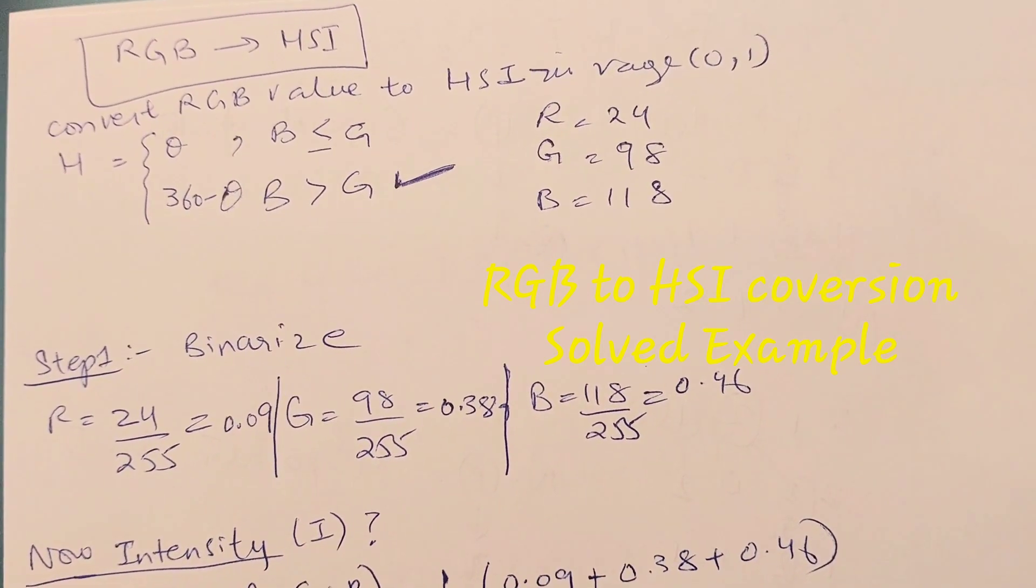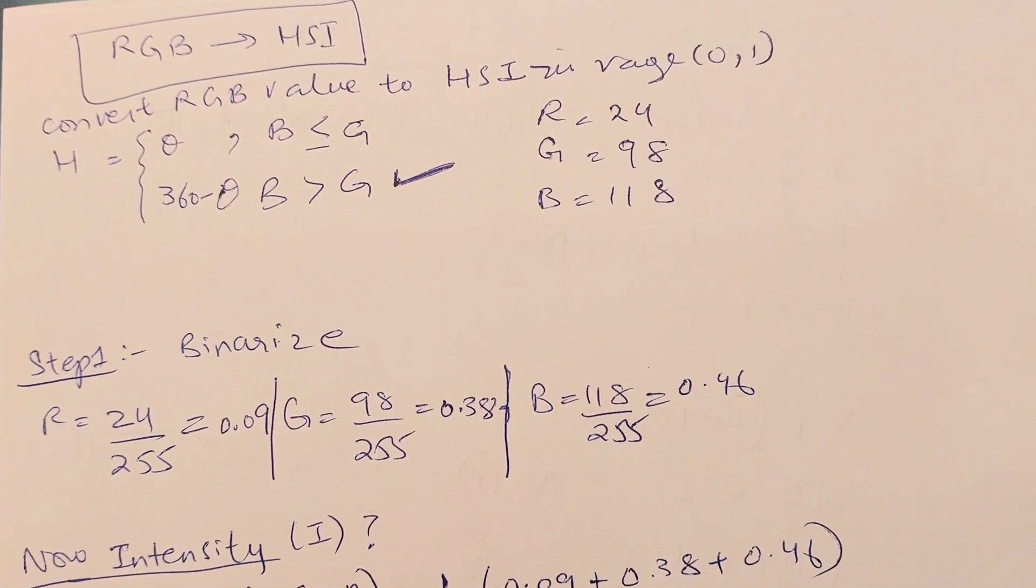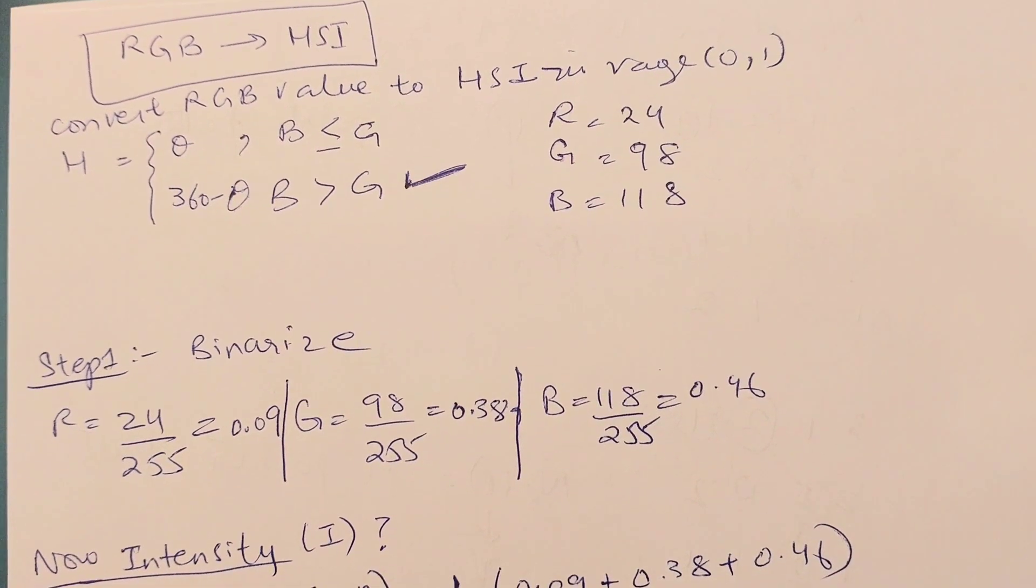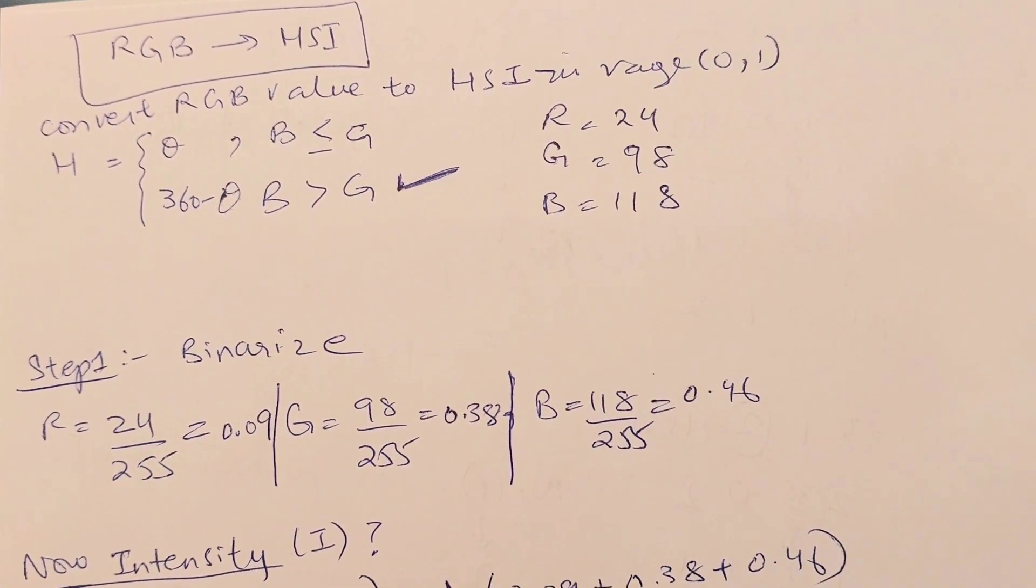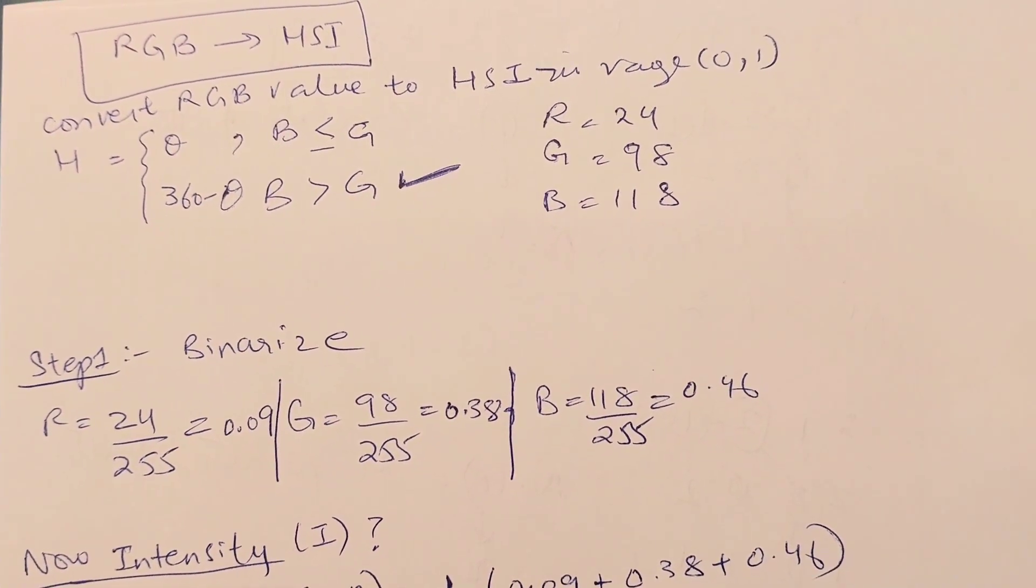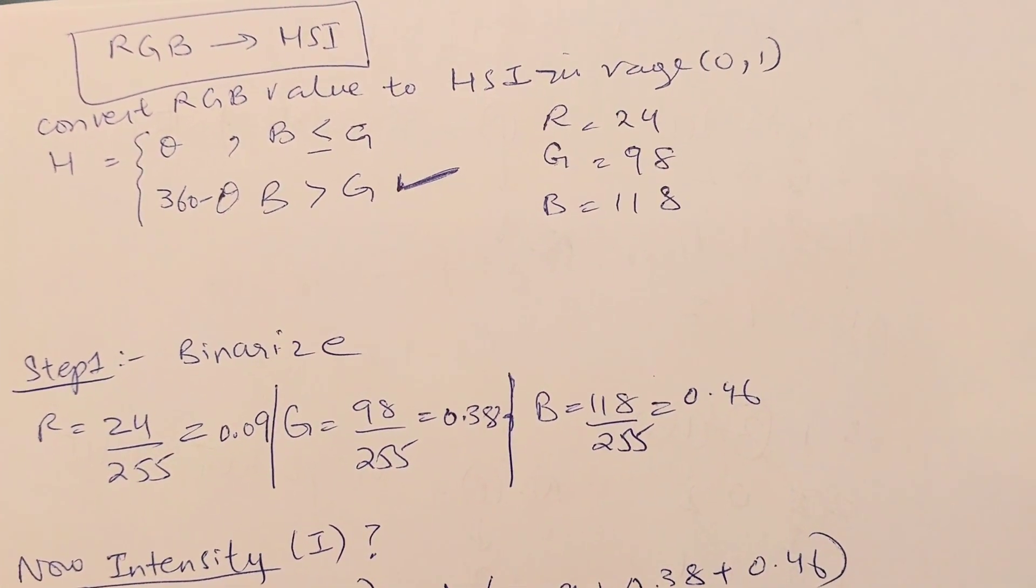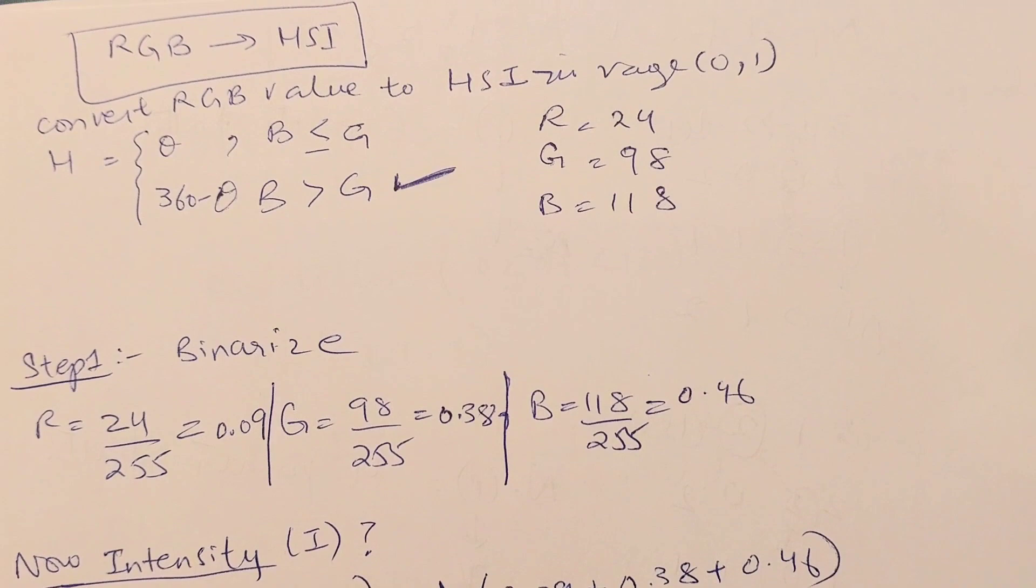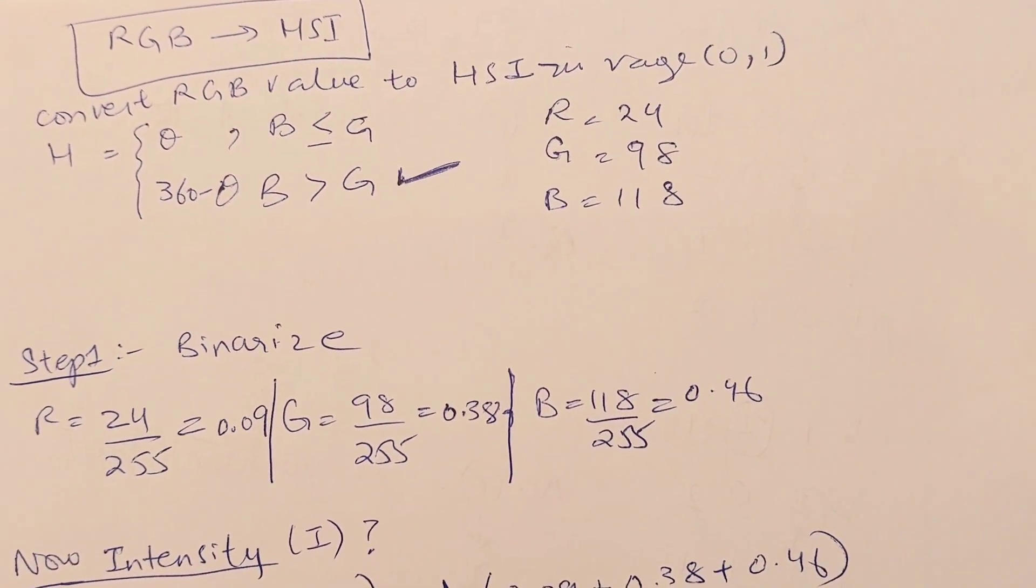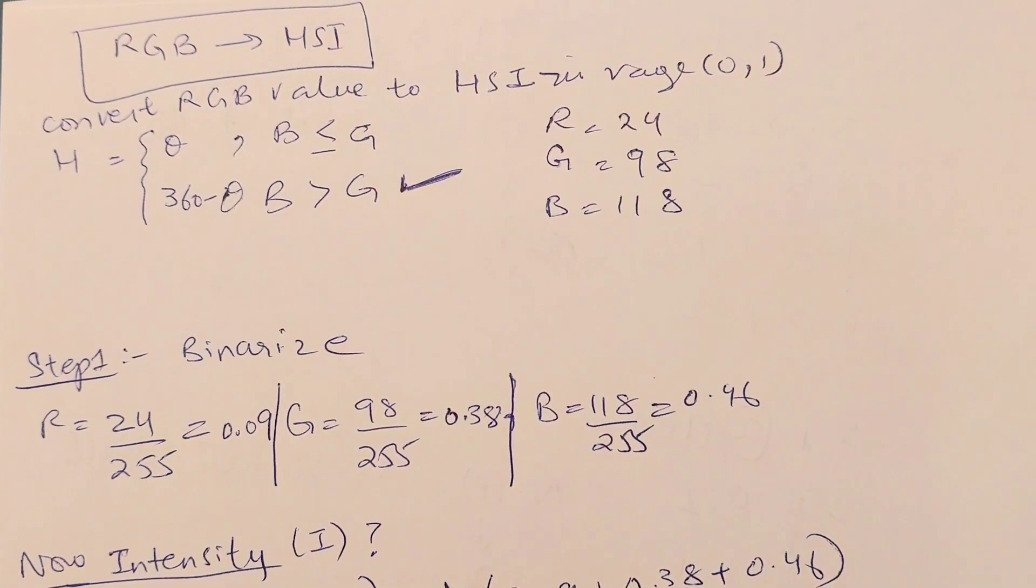We're going to solve an example for the conversion of RGB to HSI model. First, understand that there are two types of color models used to define any image. One is an RGB model in which you define a model in terms of R, G, and B components.